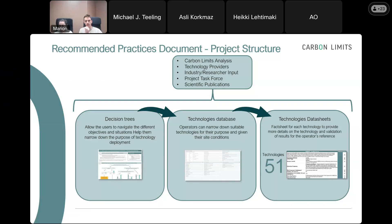Decision trees. This is the first question: I'm trying to achieve a certain objective — how do I get there? We have a number of trees to try to make it as simple as possible, with yes/no questions or simplified questions to see how the technology can be deployed to get me to my goal.